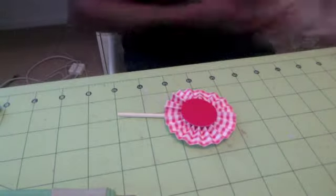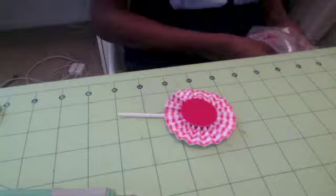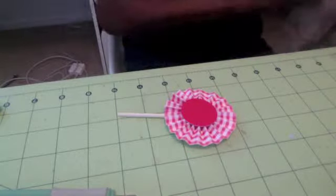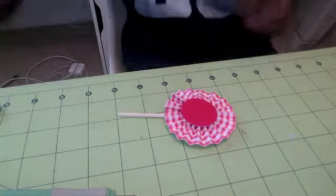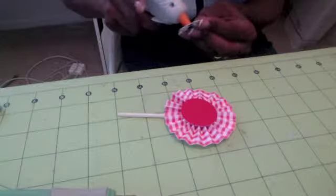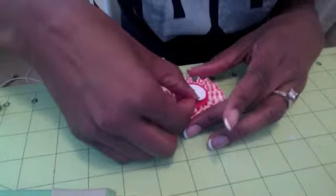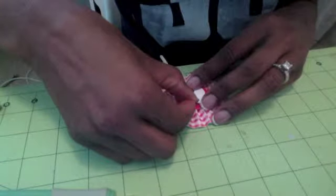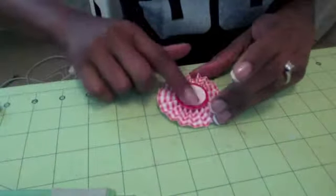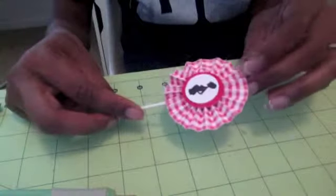I'm going to take my little picture, and you can use regular glue for this part if you want to because it's just paper on paper, but I just think it's easier to go ahead and use the same adhesive. So I'm going to put this on here and I'm going to put our girl on the front and the center. And there you have it, it's your rosette cupcake topper.